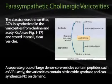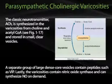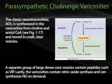The classic neurotransmitter acetylcholine is synthesized in the varicosities from choline and acetyl-CoA (see Figure 1-17) and stored in small, clear vesicles. A separate group of large, dense core vesicles contain peptides such as VIP. Lastly, the varicosities contain nitric oxide synthase and can therefore synthesize nitric oxide on demand.